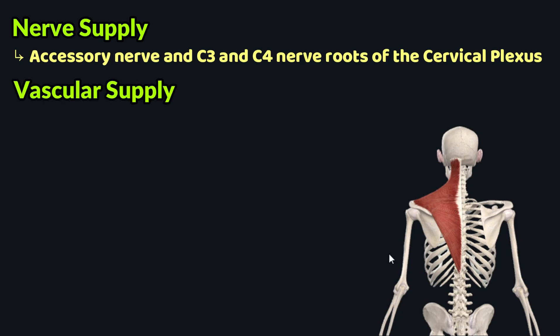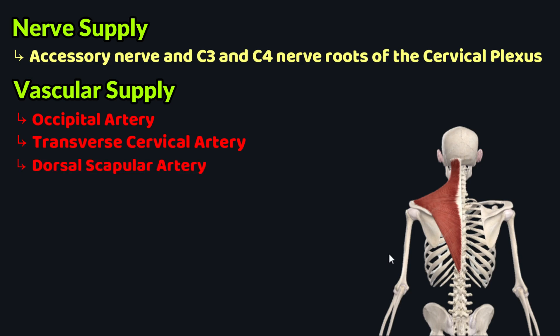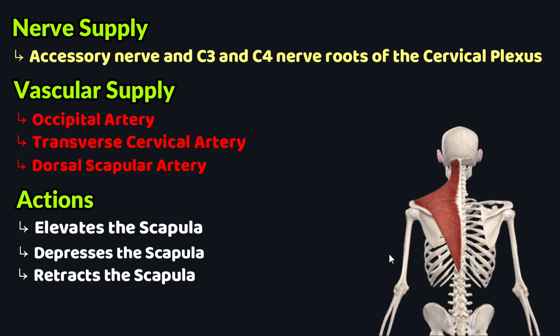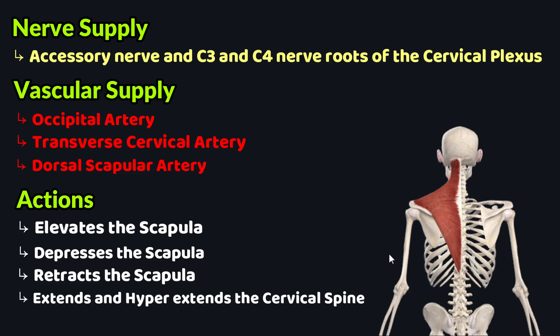Regarding vascular supply, three arteries supply this muscle: the occipital artery, the transverse cervical artery, and the dorsal scapular artery. In terms of functions, the trapezius elevates the shoulder girdle through its descending group of fibers, depresses the scapula through its ascending group, and retracts the scapula through its transverse group of fibers. This muscle also extends and hyperextends the cervical spine, and laterally flexes the cervical spine.